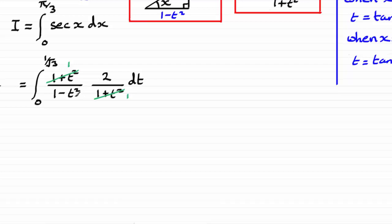And 1 minus t squared factorizes, it's the difference of 2 squares: 1 plus t, 1 minus t. So if we simplify that integral, we get this. And now we can see that to do this integral, we need to split it into partial fractions.